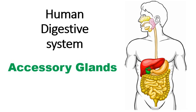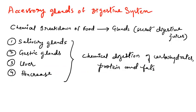Today we are going to see accessory glands in the human digestive system. There are four accessory glands in the digestive system: salivary gland, gastric gland, liver, and pancreas. All of these will help in the digestion of carbohydrates, proteins, and fats. Let's discuss them one by one and how they help in the digestion process.